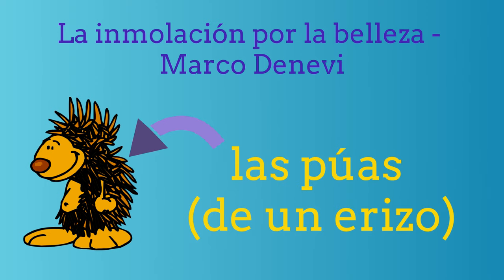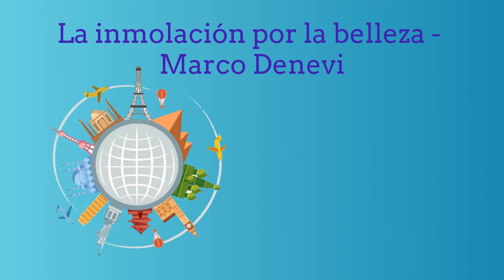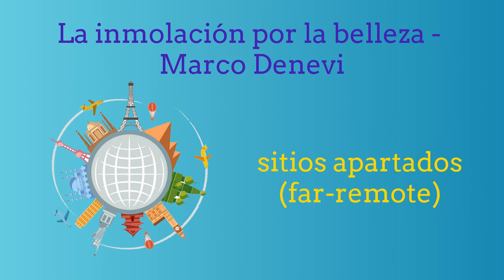Las poas de un erizo. Esta imagen representa a sitios apartados, es decir, lejanos. Son sitios o lugares que están muy lejos de donde tú estás.